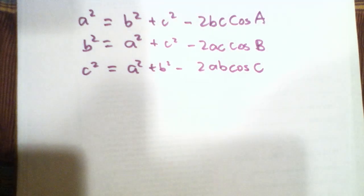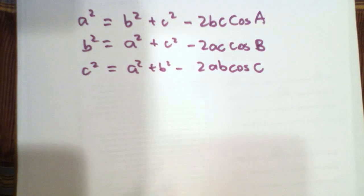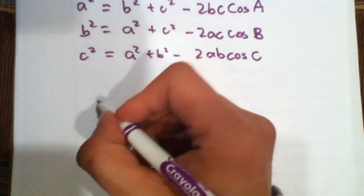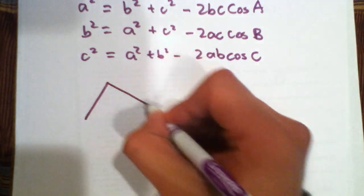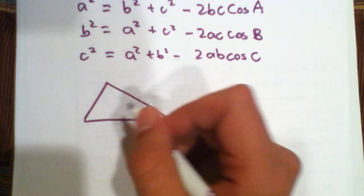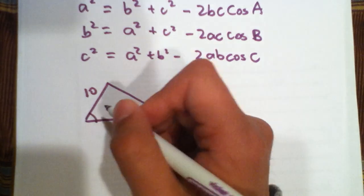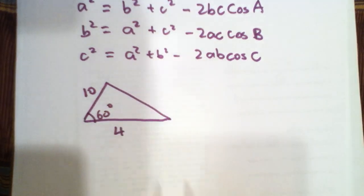Let's do an example of this. This is more useful when you get a triangle and two adjacent sides and the angle between them is given. An example of this would be four, ten, two adjacent sides and the angle between them is 60 degrees.